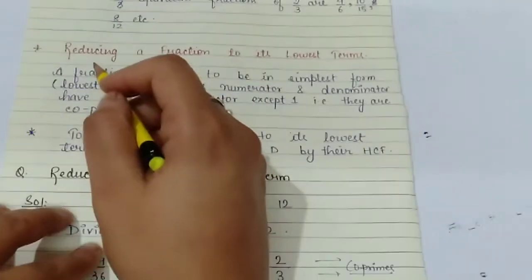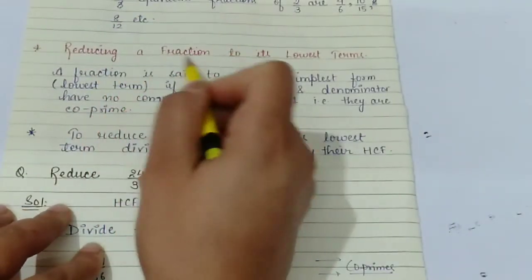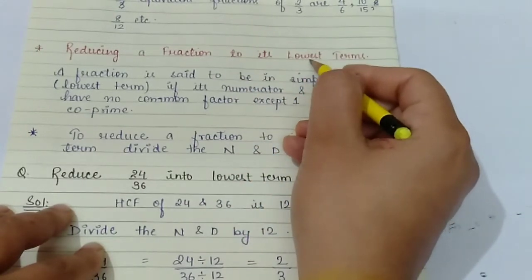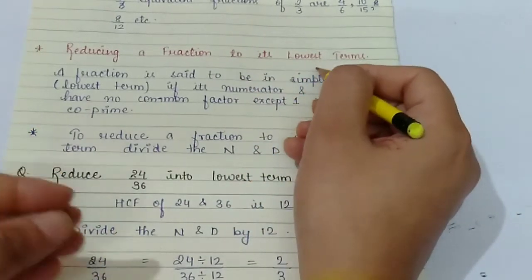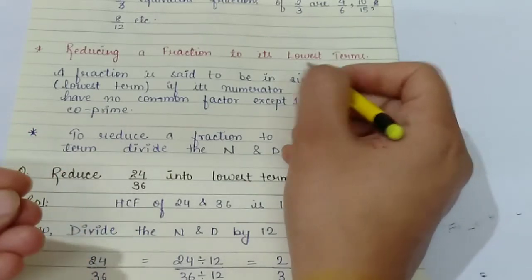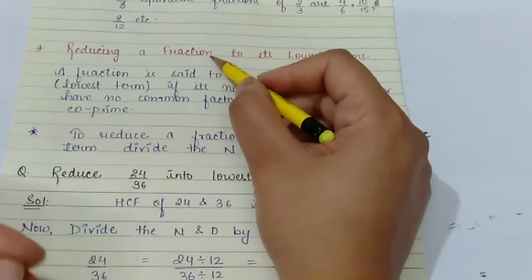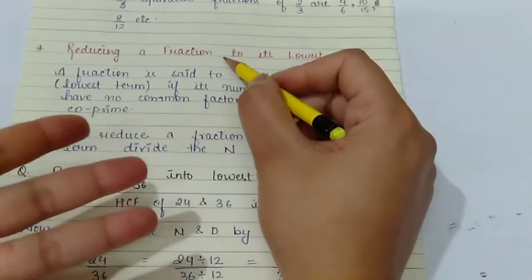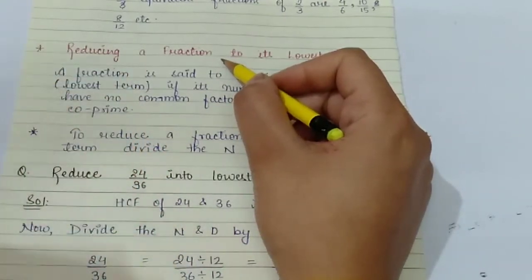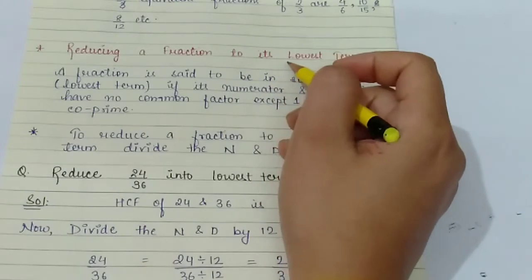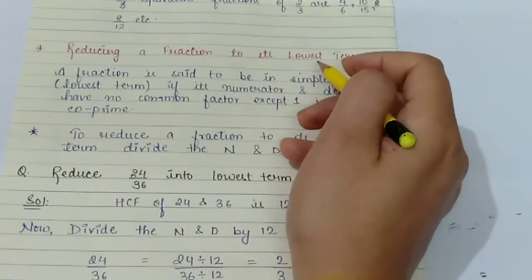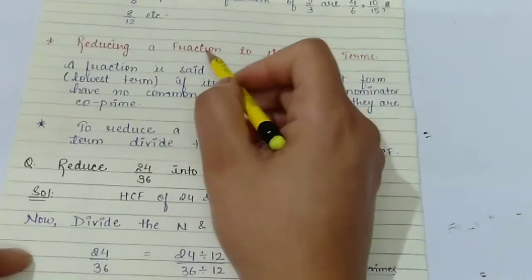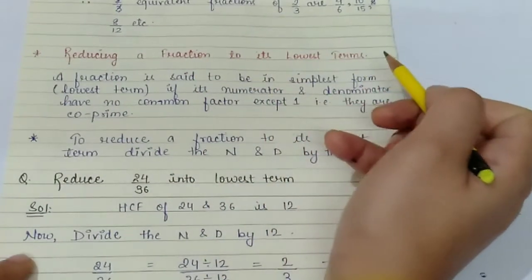Now students, let us see the next topic: reducing a fraction to its lowest terms. Lowest terms means the simplest form — meaning the fraction is made as small as possible so it can't be further divided. The numerator and denominator can be taken in their simplest form. That is known as reducing a fraction to its lowest terms.